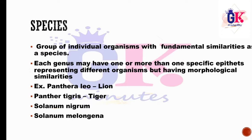Species is the lowest rank — the lowest taxon. A group of individual organisms with fundamental similarities forms a species. Each genus may have one or more than one specific epithet representing different organisms with morphological similarities. For example, Panthera leo (lion) and Panthera tigris (tiger) share the same genus Panthera but different species — both show fundamental similarities, with the genus part being the same. Similarly, Solanum nigrum and Solanum melongena (brinjal) share the same genus.